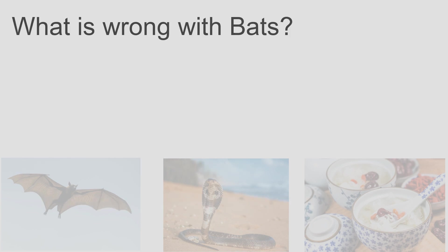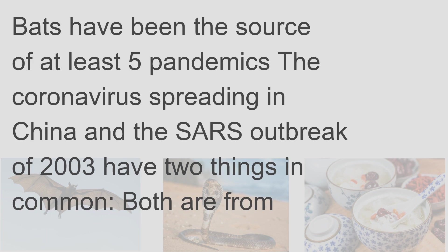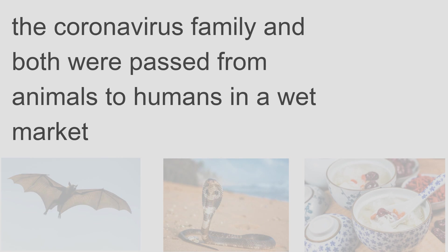Bats have been the source of at least five pandemics. The coronavirus spreading in China and the SARS outbreak of 2003 have two things in common: both are from the coronavirus family, and both were passed from animals to humans.